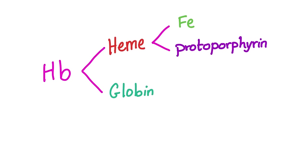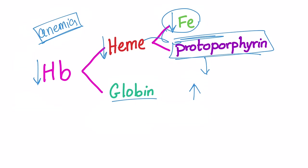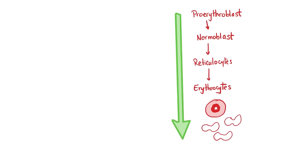Let's review: hemoglobin consists of heme and globin. Heme consists of iron and protoporphyrin. In iron deficiency anemia, iron is decreased → heme decreased → hemoglobin decreased — that's why it's anemia. Globin will be normal. Since protoporphyrin won't have enough iron to bind with to form heme, protoporphyrin will start to pile up.